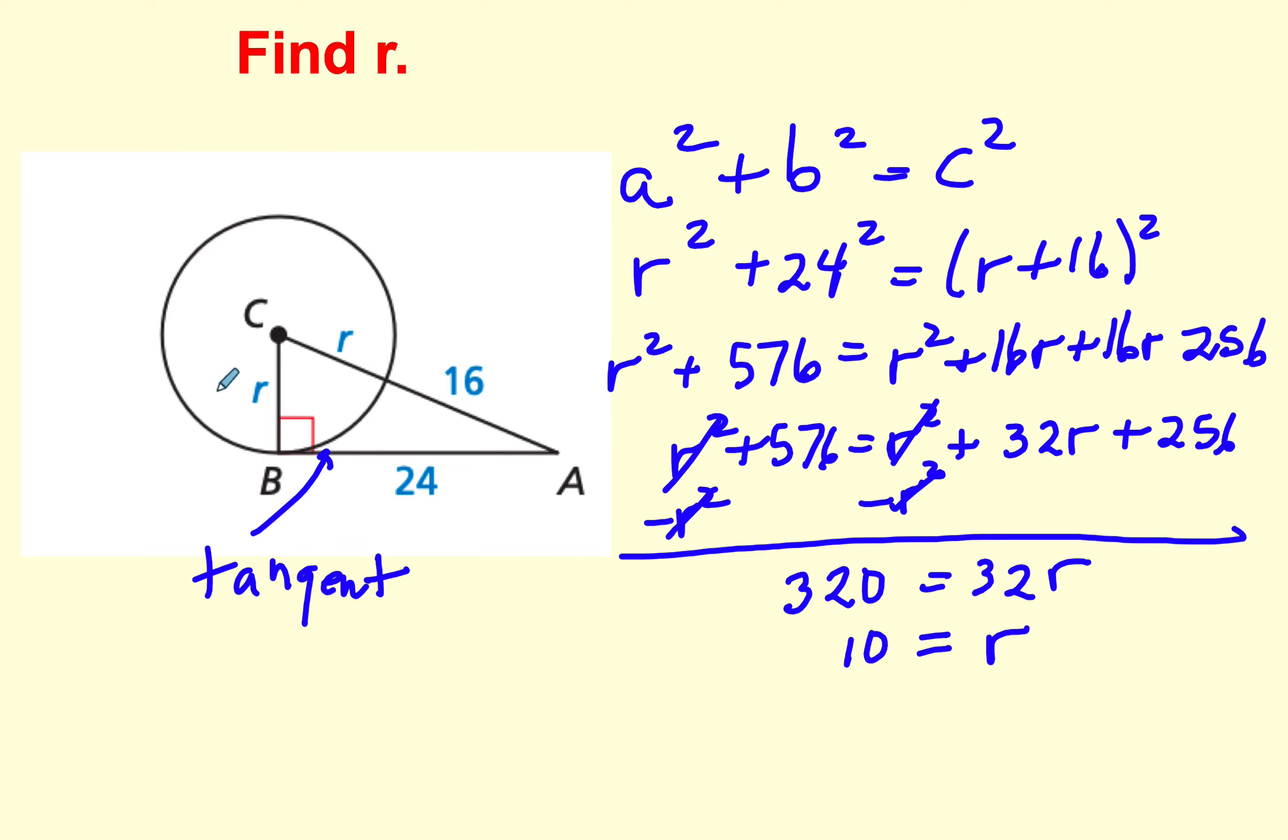So this would have to be 10. This would be 10, which would make this whole hypotenuse 26. And I hope you recognize that. That is a 5, 12, 13 triangle. So we do know that is a right triangle.